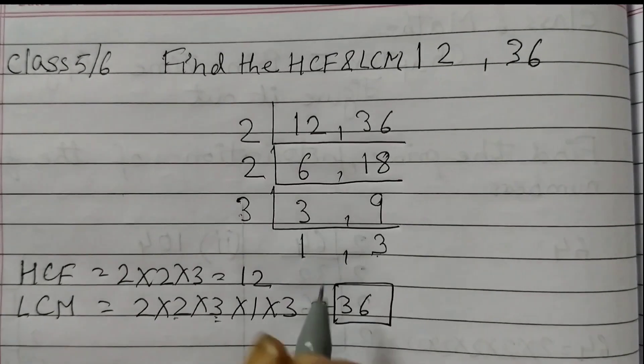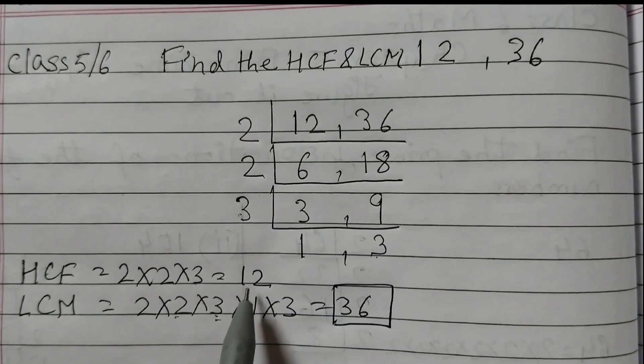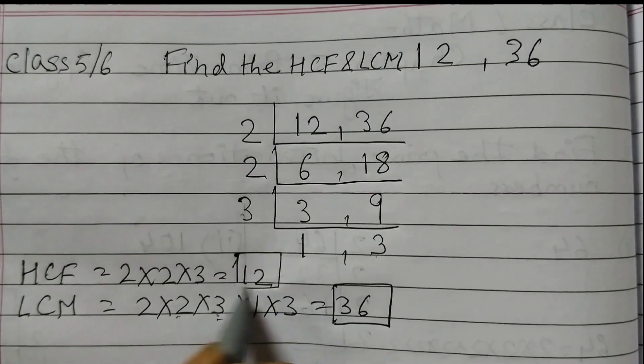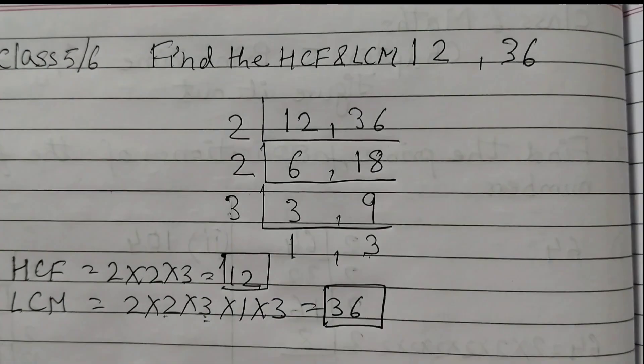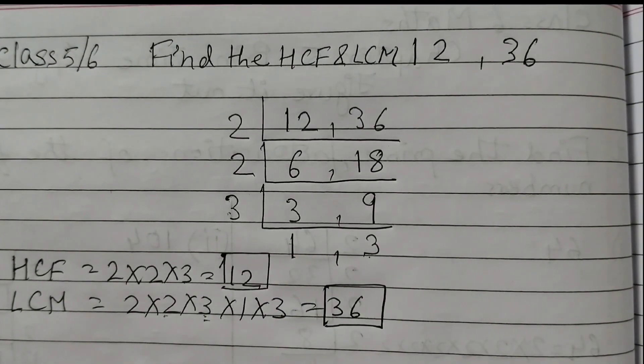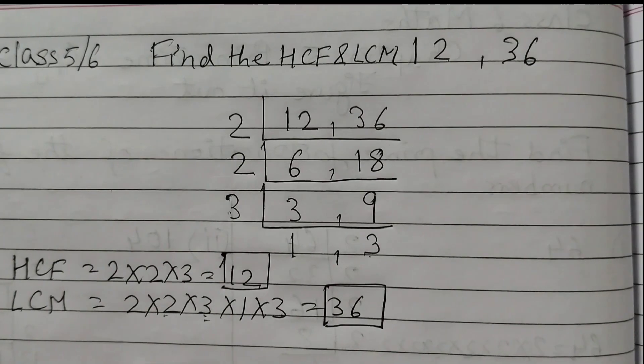36 is the lowest common multiple of 12 and 36, and 12 is the HCF. By following this method, you can find the HCF and LCM very easily. Thank you.